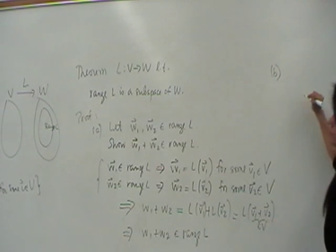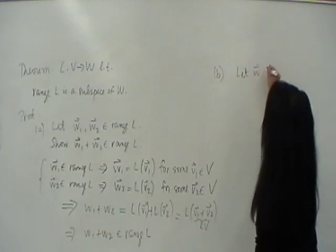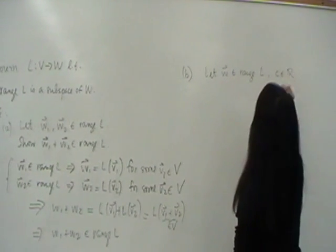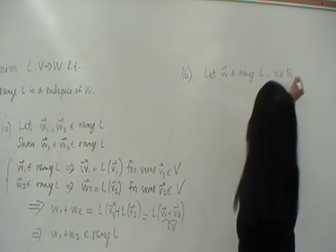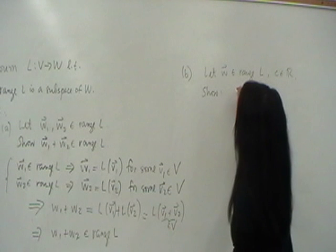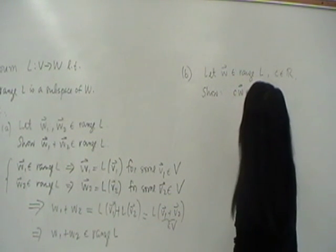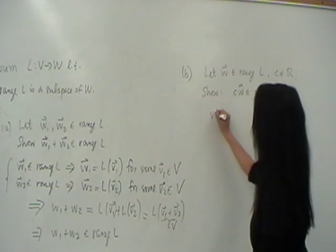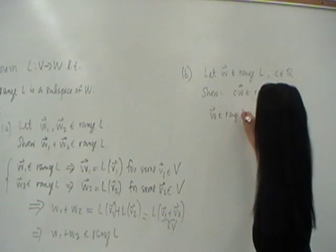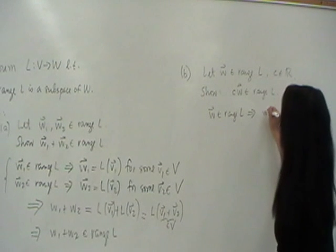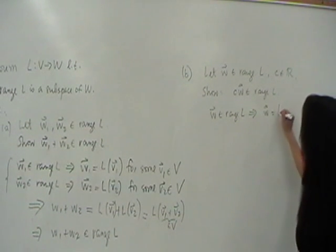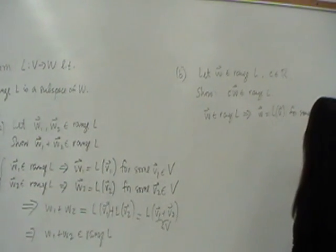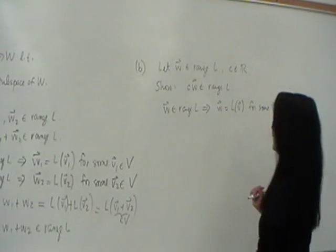Because of the closure property. We were actually showing the closure property. It's closed under addition and that's what it means, that this sum is in that set. Part B, what do we have to show? If W is in the range of L and C is a scalar, what do we want to show? C times W is also in the range of L. So the same thing that we did there.